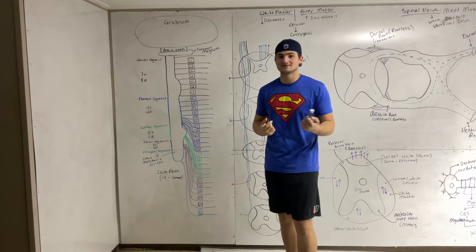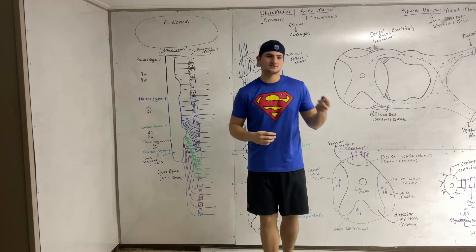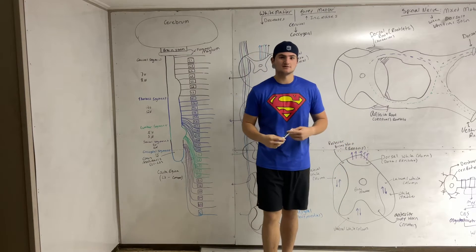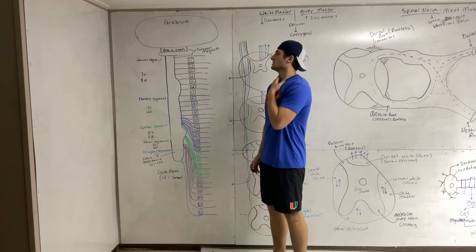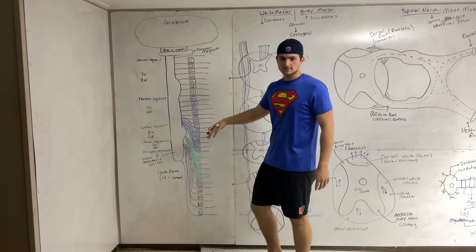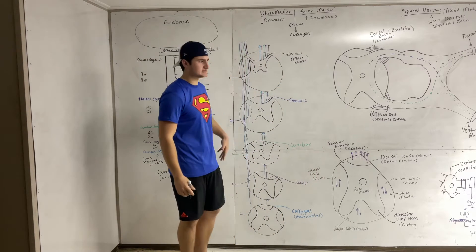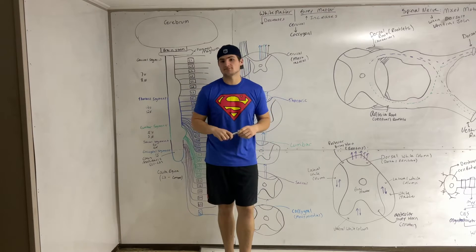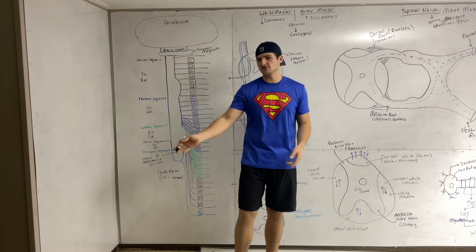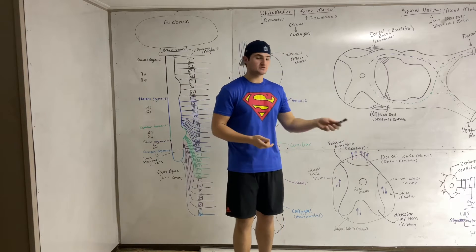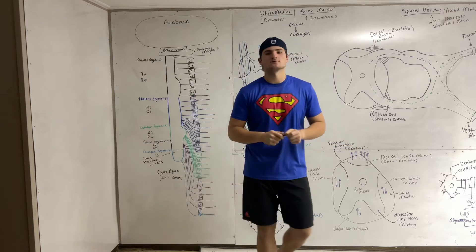This is the introduction to the next series on the different spinal tracks of our body. This is a neurology neuroanatomy lecture, and we're going to start off with the spinal cord. I'm going to talk about ascending and descending tracks and get into the big picture broadly, and then in separate videos I'll cover each track individually.